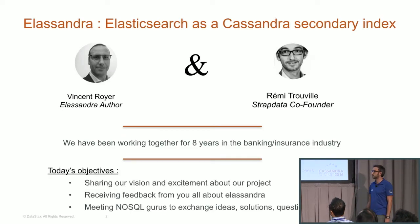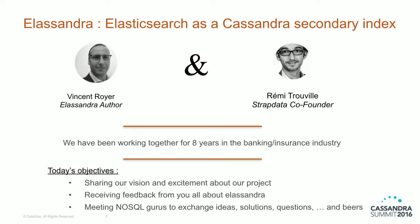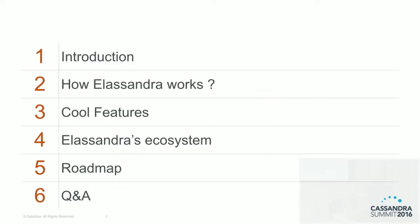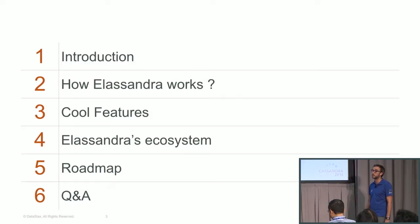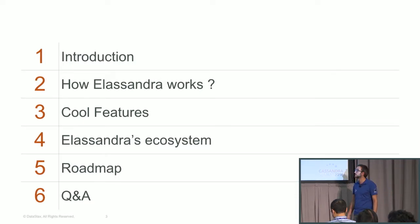Today we have three main objectives: we want to share our vision and excitement about Elasandra, we want to receive feedback since it's open source and all feedback is welcome, and we want to meet experts to exchange ideas and beers. The agenda will focus on how Elasandra works, go through our ecosystem with Kibana and Spark, do a quick look at the roadmap, and then answer your questions.